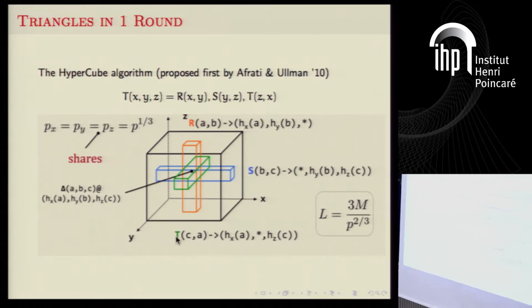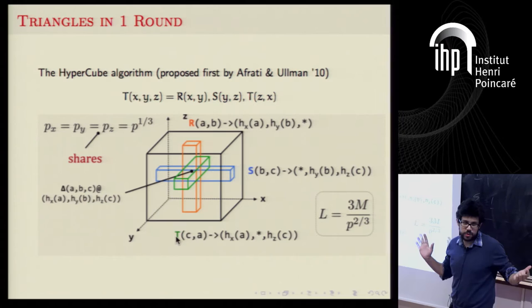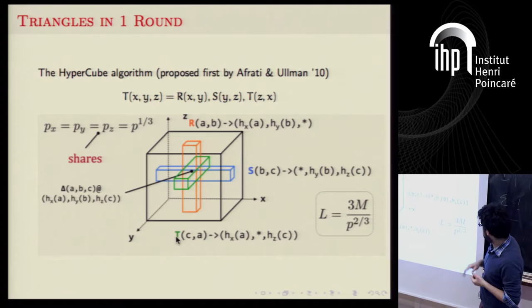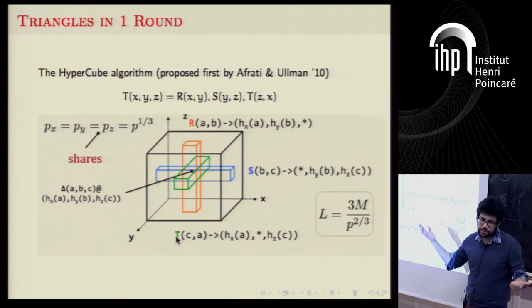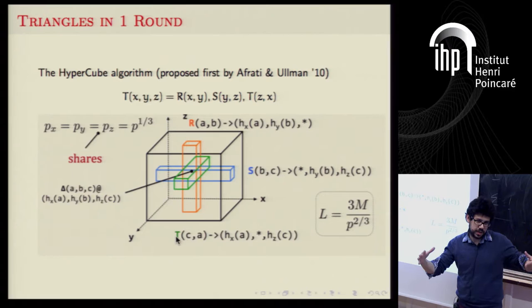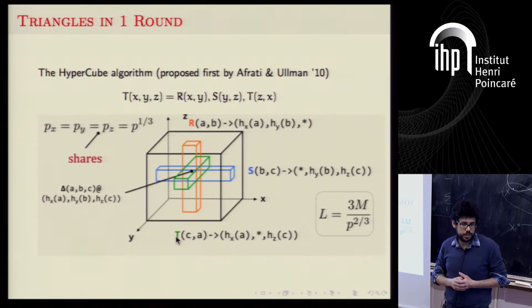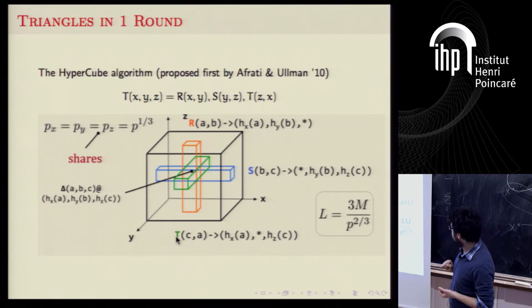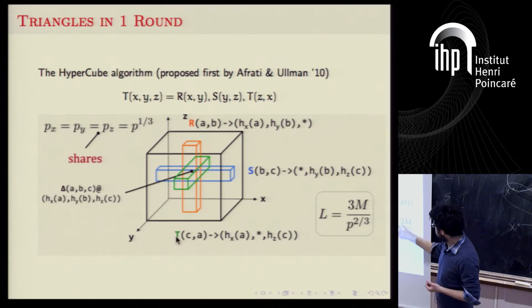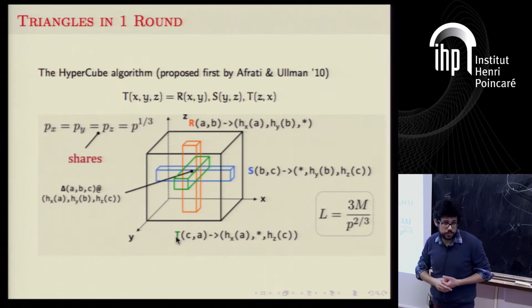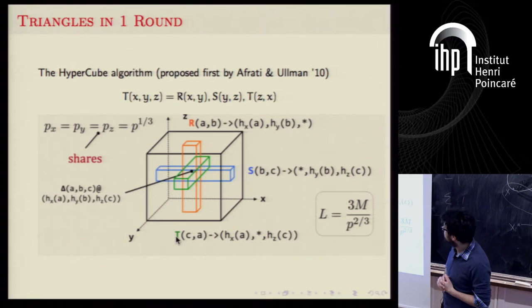What is the load? Assuming no skew — each value appears only once or a constant number of times — we're distributing across P^{2/3} slices and broadcasting the last dimension. So we're distributing data over P^{2/3} servers rather than all P, giving a load on the order of m divided by P^{2/3}. And we can prove this is also a lower bound — this is the best algorithm we can do for triangles.